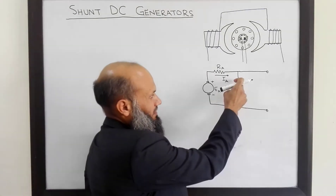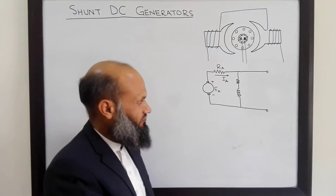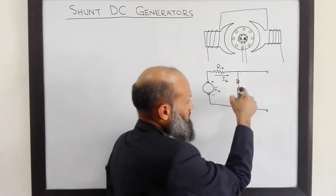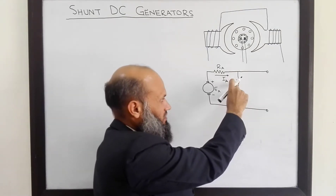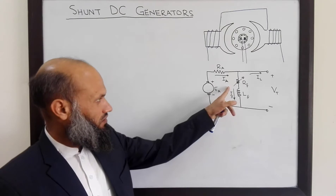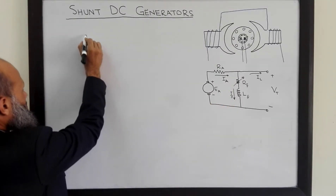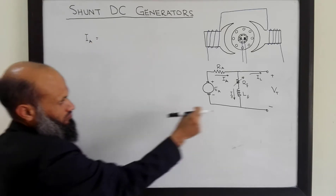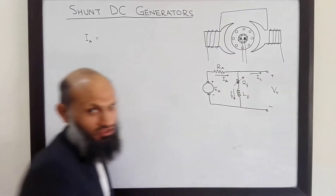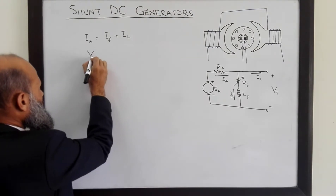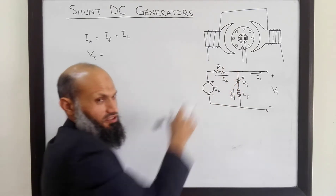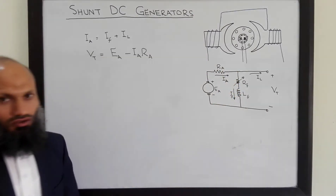Sometimes an additional variable resistor is inserted in series with the field windings, which gives us control on the terminal voltage. The resistance of the field winding combined with this variable resistor gives us the total field resistance. In shunt DC generators, the armature current equals the sum of the current which flows in the field winding and the current which flows in the load.